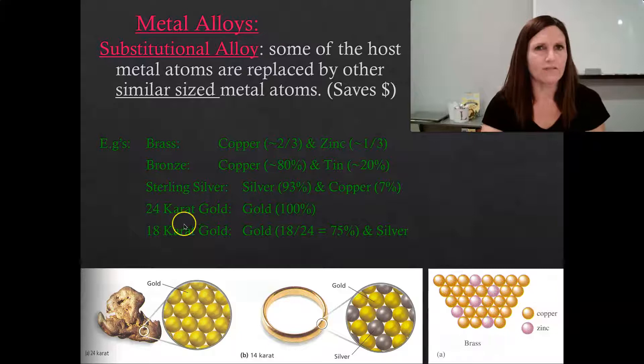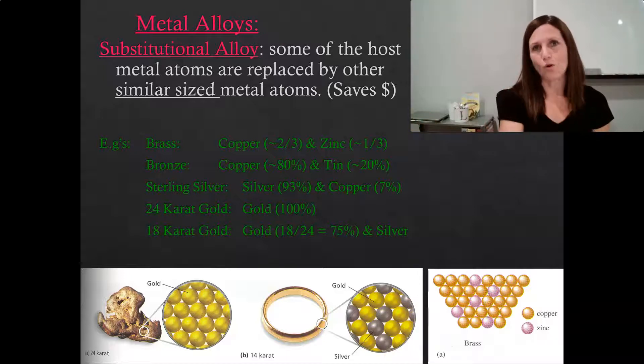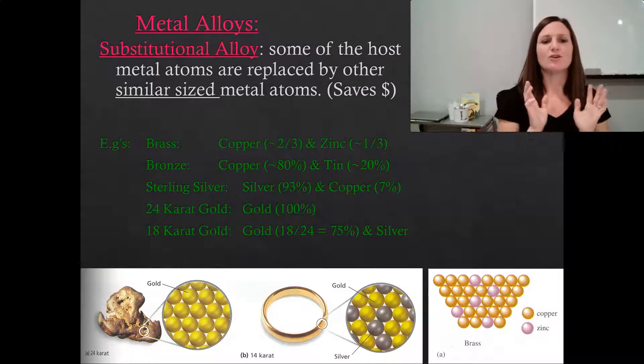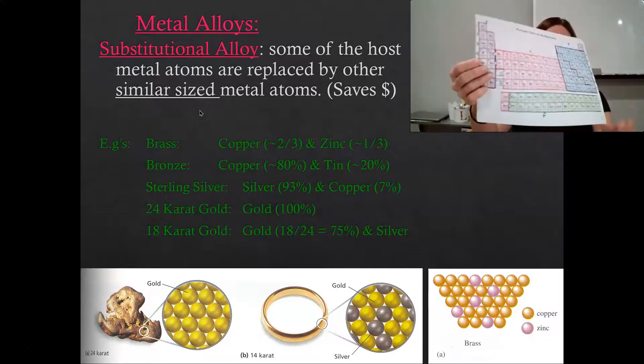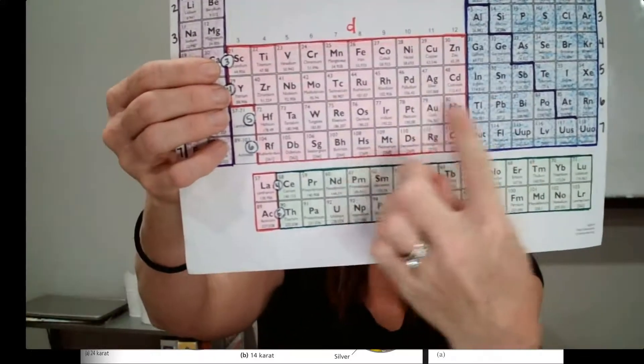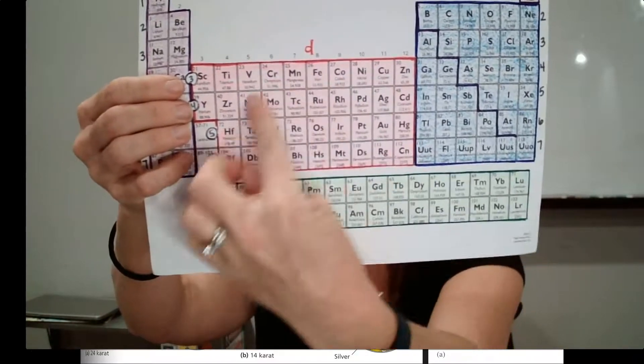We also have probably heard of like 18 carat gold. 18 carat gold is gold mixed with silver. Now silver seems expensive, but it's not as expensive as gold. So if you want to have something that looks gold but costs just a little bit less, then you're going to get a lower carat of gold. Substitutional alloys replace with similar sized metals. So when we're making these substitutions, we're making them very close to one another on the periodic table - something that's nearby so that the metals are approximately the same in size, but they typically have different costs.